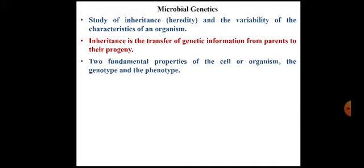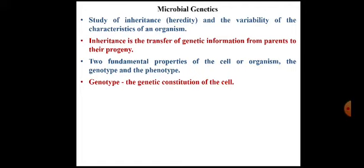There are two fundamental properties of a cell or organism: the genotype and phenotype. The genetic constitution of the cell is called the genotype. That means the set of genes which are present in an organism is called the genotype.